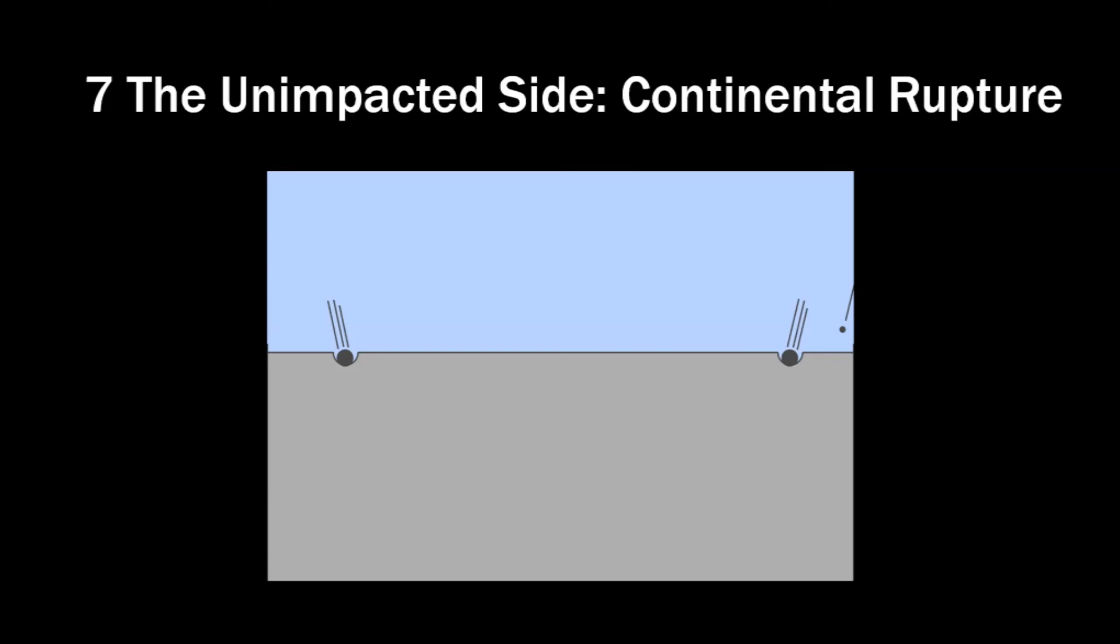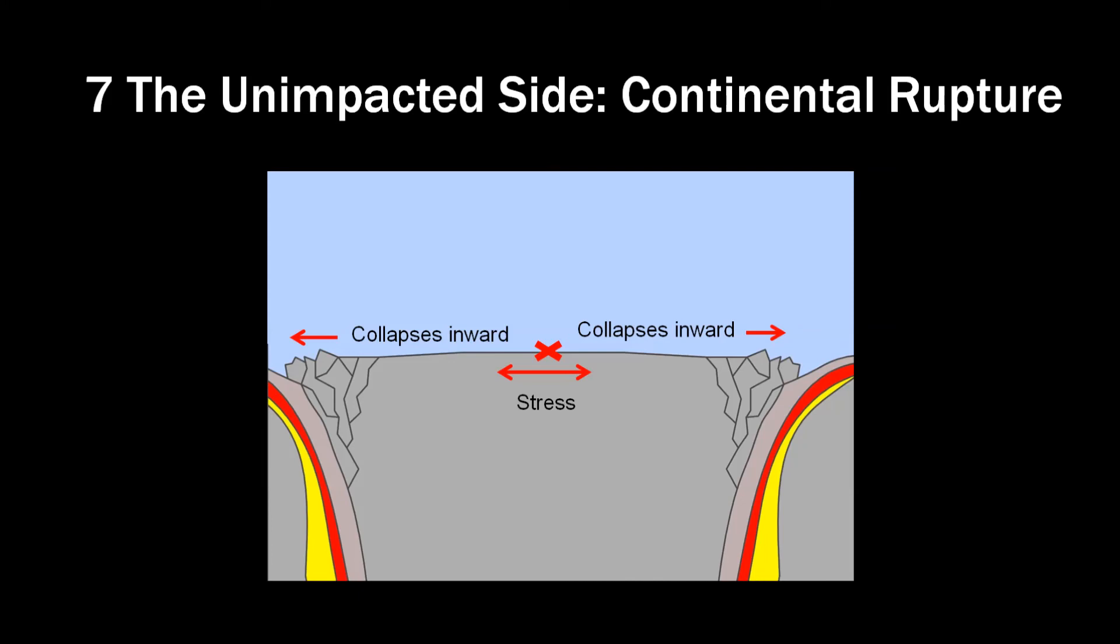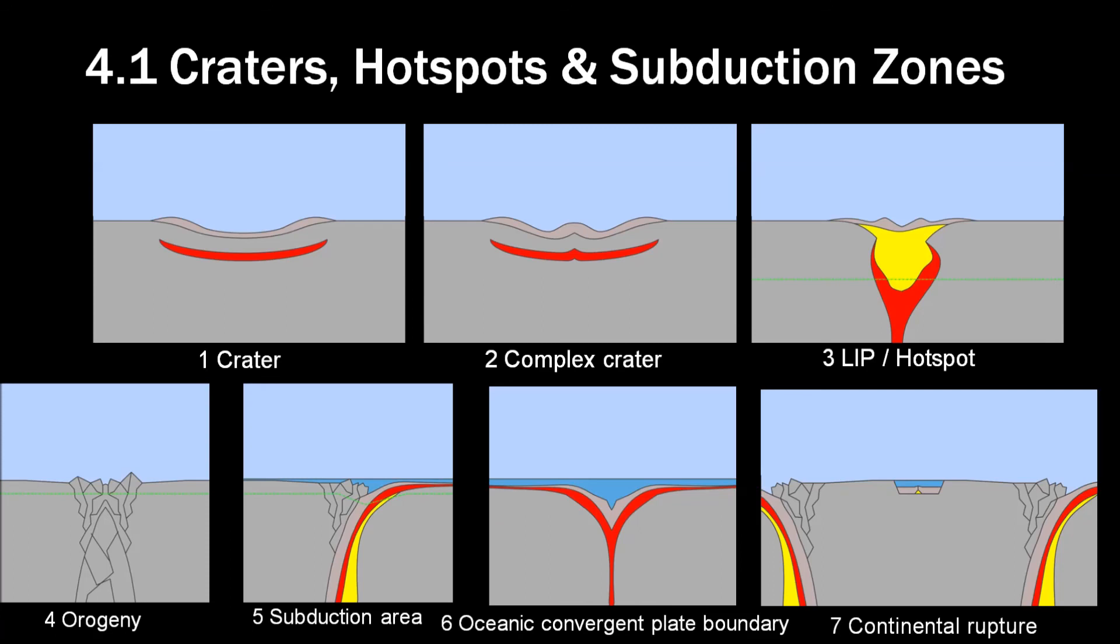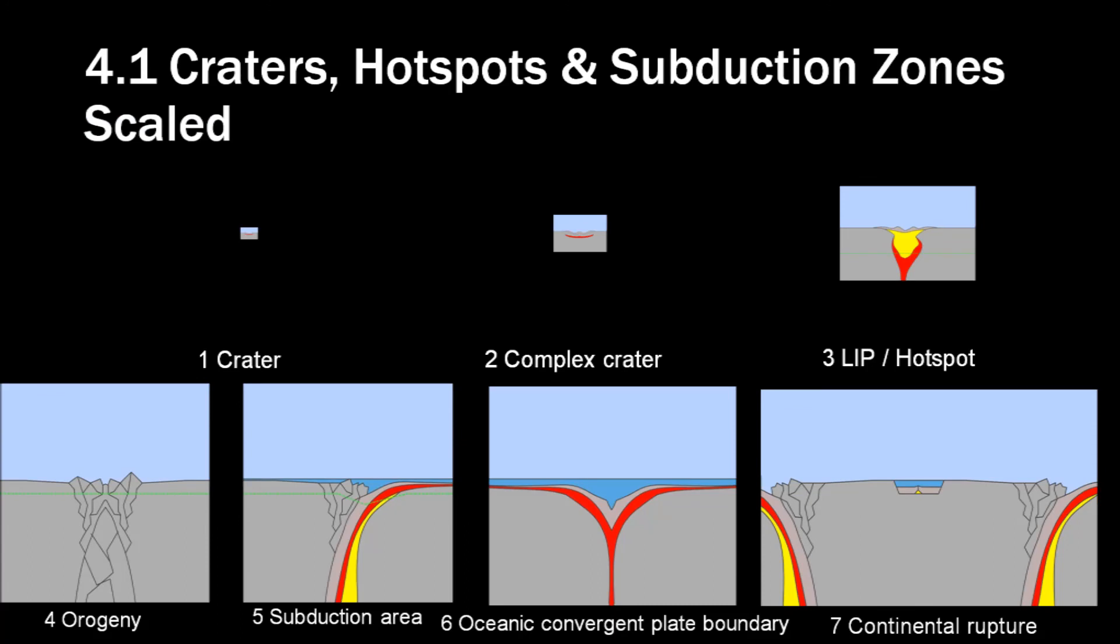Now this shows that the larger the impact, the more the heat tends to end up inside the earth. All this mess would also do something to the unimpacted side. Because the impact causes a shift on both sides of the unimpacted side, and the crust will be exposed to a lot of stress. This causes the crust to be ruptured apart. This fills up with lava and causes a mid-oceanic ridge, which I showed earlier. So that gives seven different features that we could find on earth. Simple craters, complex craters, large igneous provinces with a hotspot, orogeny, subduction area, convergent plate boundary, and a continental rupture. And this is when we put them to scale.